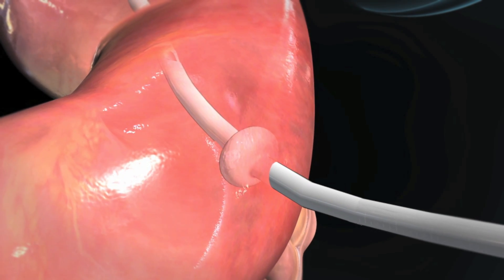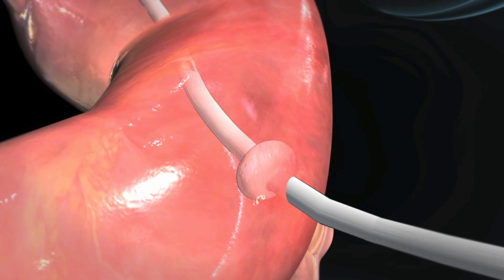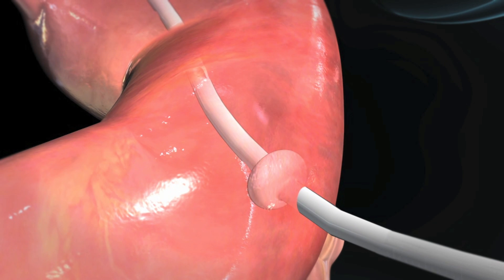A soft, round bumper attached to the portion of the tube that remains inside the stomach helps secure the tube in place.